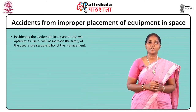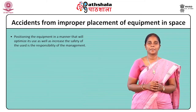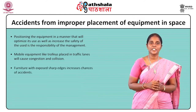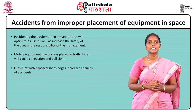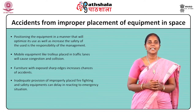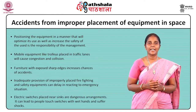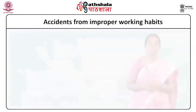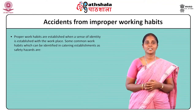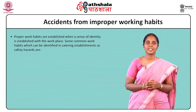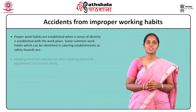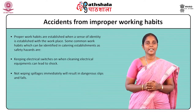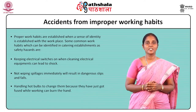Some examples of equipment placement hazards: mobile equipment like trolleys placed in traffic lanes will cause congestion and collision. Furniture with exposed sharp edges increases the chances of accidents. Improperly placed firefighting and safety equipment can delay reaction to emergency situations. Electrical switches placed near sinks are dangerous and can lead to people touching switches with wet hands and suffering shocks. The third cause is accidents from improper working habits. Common hazardous work habits include: keeping electrical switches on while cleaning electrical equipment, not wiping spillages immediately causing dangerous slips and falls, and changing a fused bulb while it is still hot causing burns.